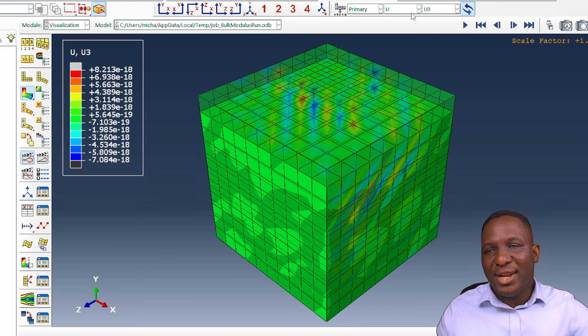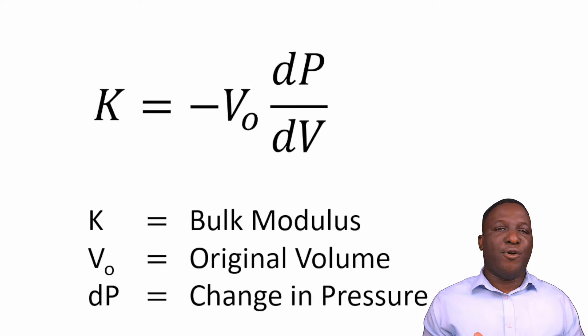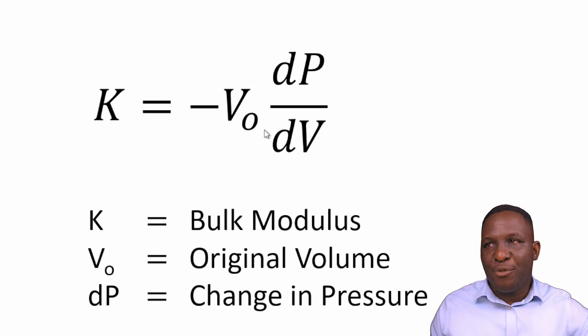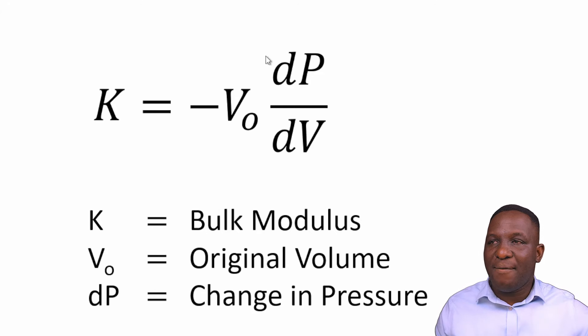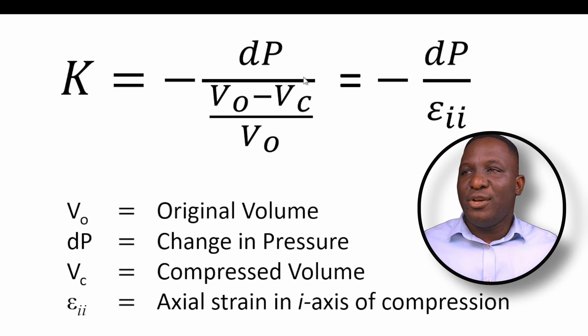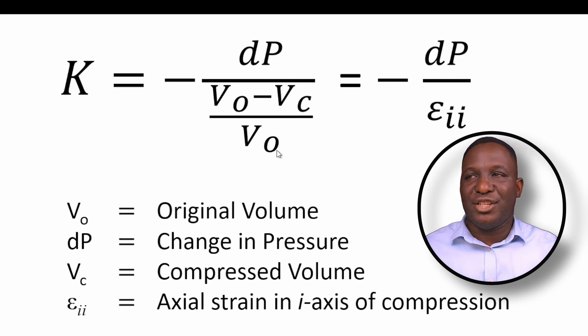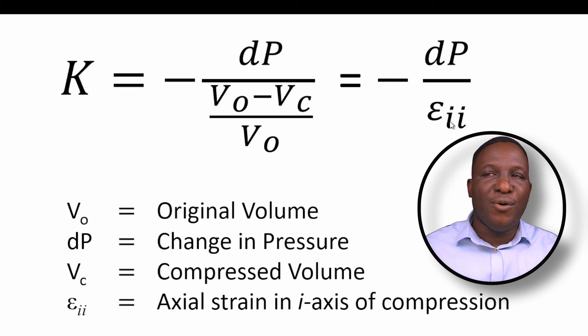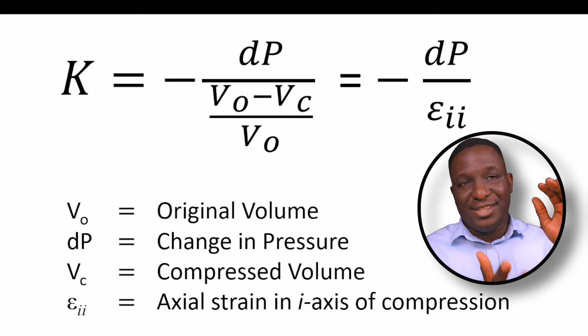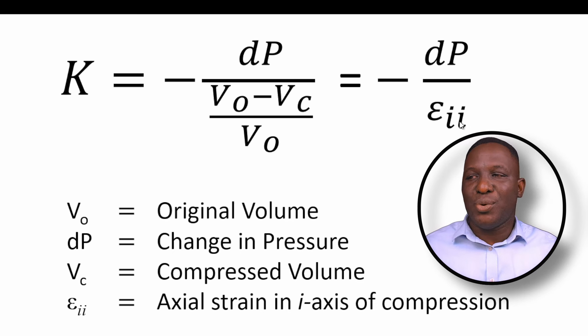Let's look at the theory. The formula for calculating bulk modulus is K = −V₀(dP/dV), where V₀ is the original volume and dP is the change in pressure within the bulk of the material — different from the applied pressure. There is an average maximum change of pressure within the material, and dV is the change in volume. Evaluating further: dP/(V₀−Vc)/V₀, the equation becomes dP divided by the volumetric strain — the axial strain in the 2-axis direction of compression.